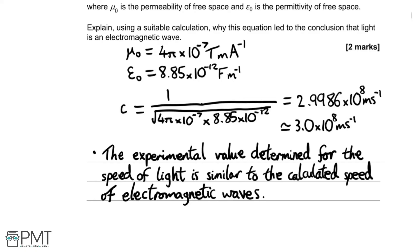We don't need to state that this means light is an electromagnetic wave because that's already written in the question. Your first mark is for making the calculation that gives 3 times 10 to the 8 metres per second, and your second mark is for the explanation comparing the experimental value to the calculated value. Two marks there.